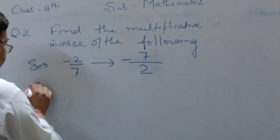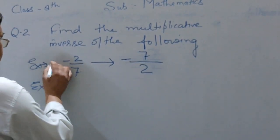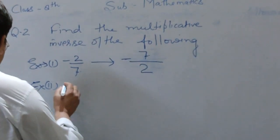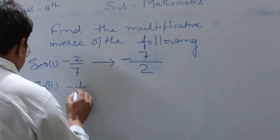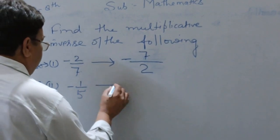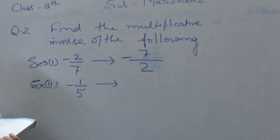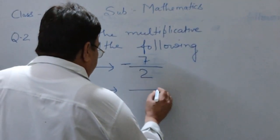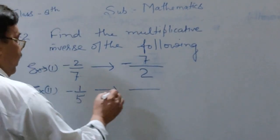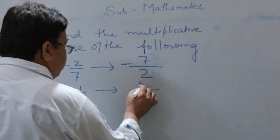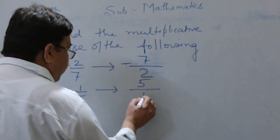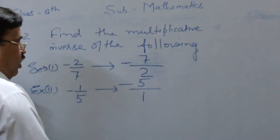And second example. This is the first example. In this example, 5 becomes numerator and 1, numerator 1 becomes denominator, and put the sign. We will meet in next video.